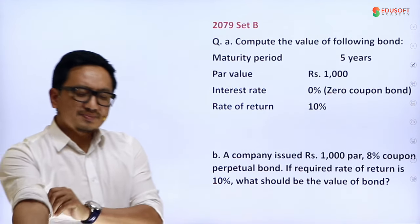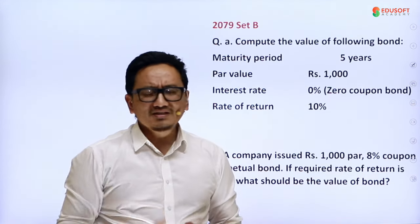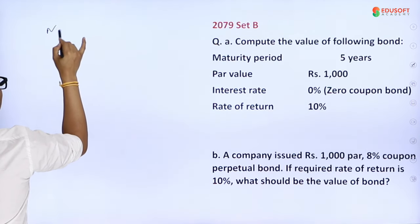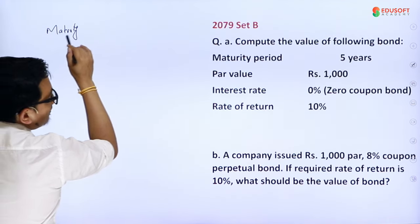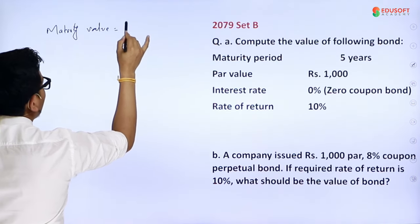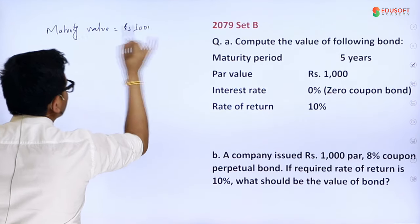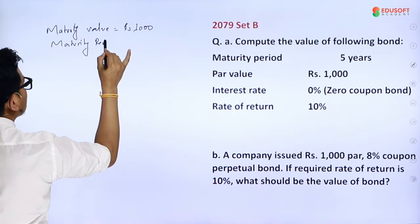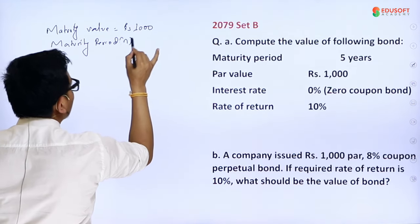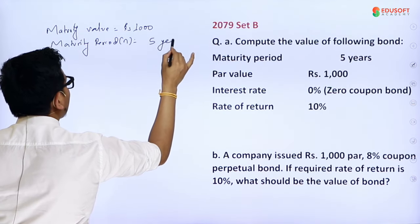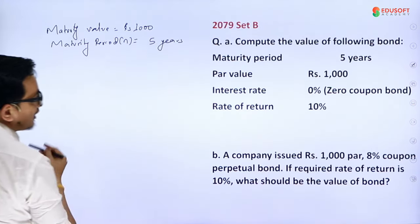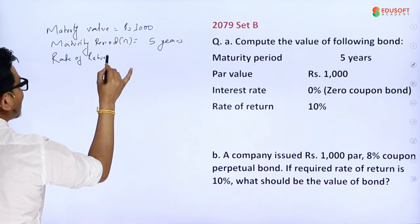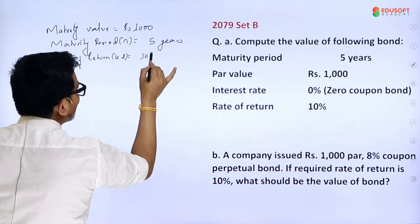The zero coupon bond formula is M divided by (1 plus kd) to the power n. Maturity M equals RS 1000. Maturity period n equals 5 years. Rate of return kd equals 10%. This is a 4-mark equation.